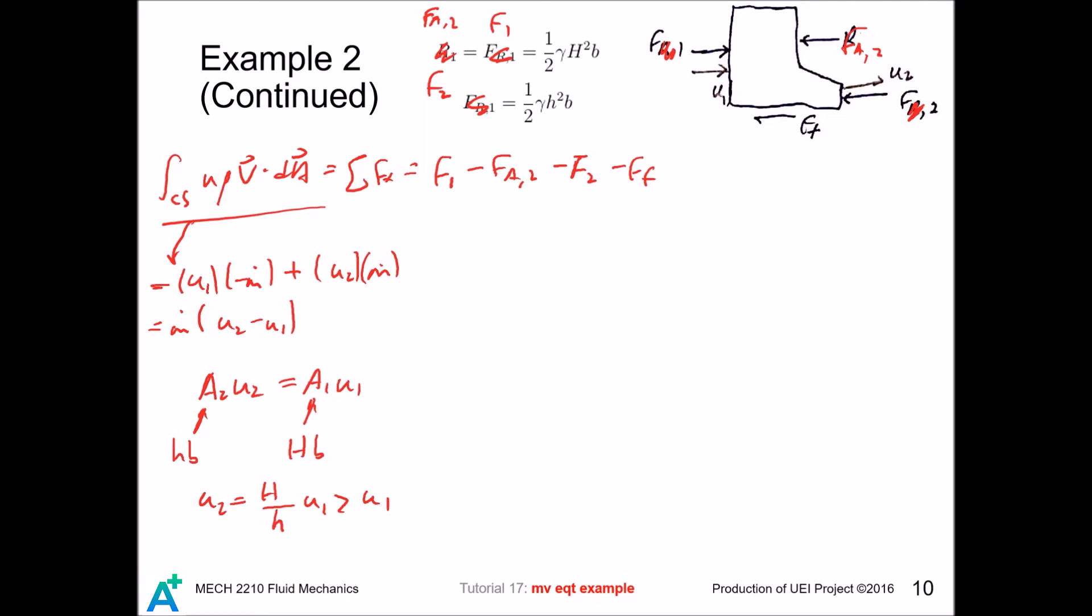u2 is greater than u1, so this term is greater than 0. And we make the anchoring force as a subject. And these are all greater than 0. This is the anchoring force for the closed gate. So this is smaller than F1, and we have F2 smaller than F1.